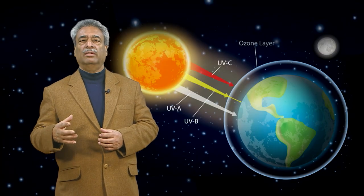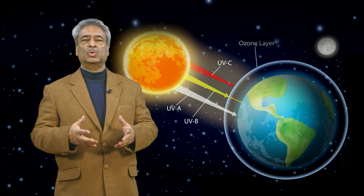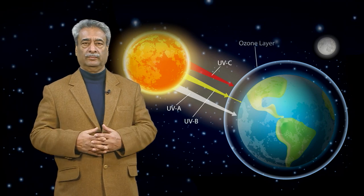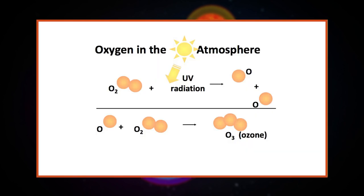The ozone layer is mainly found in the lower portion of the stratosphere, from approximately 20 to 30 kilometers above Earth's surface, although the thickness varies seasonally and geographically. The photochemical mechanisms that give rise to the ozone layer were discovered by British physicist Sydney Chapman in 1930.